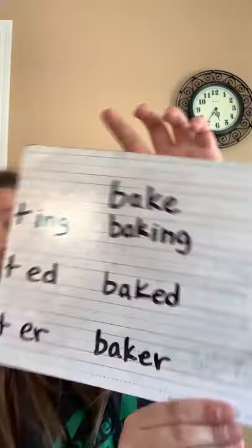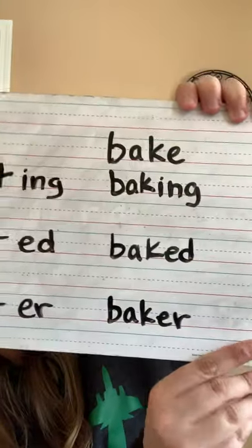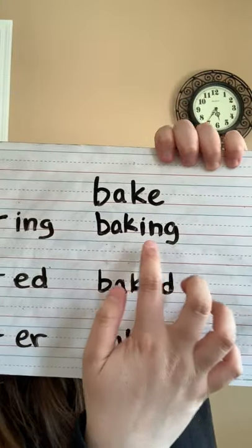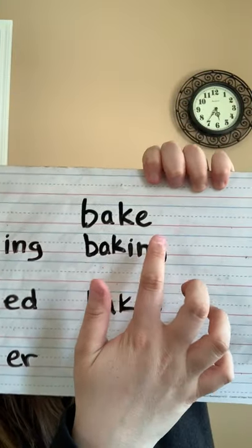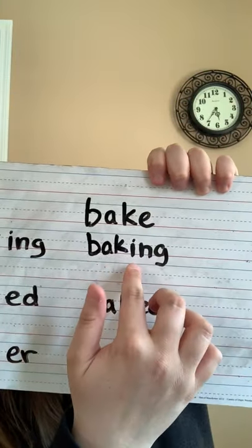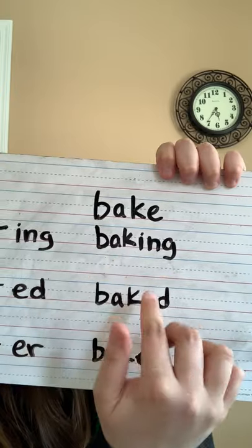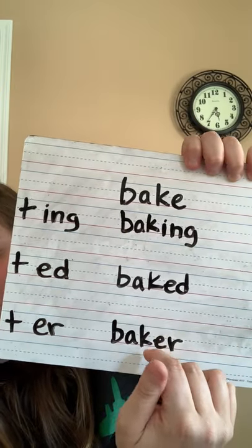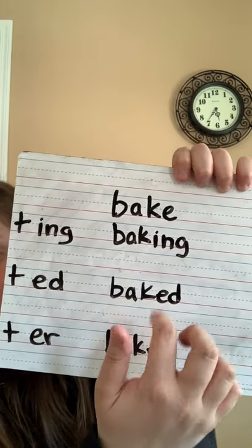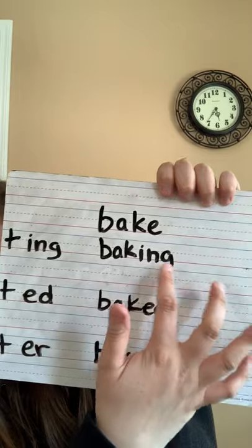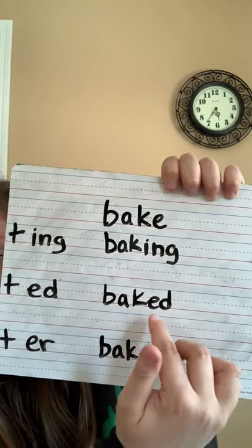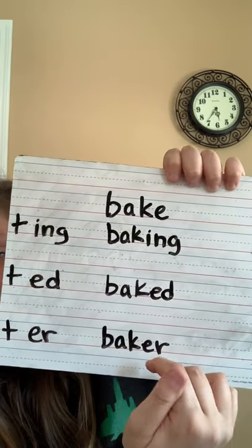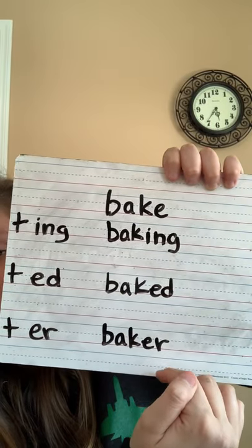As you can see, boys and girls, I dropped the magic E. There's no E anymore right after the K. I dropped that magic E and then I added the ending — I either added ing, I added ed, or I added er.